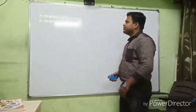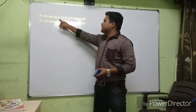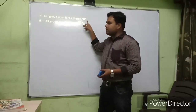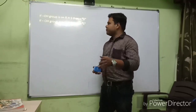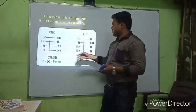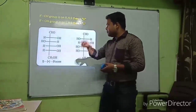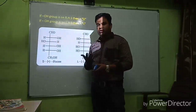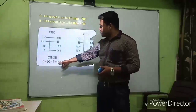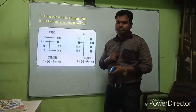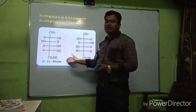If the OH group is on the right-hand side, it is called D; if on the left-hand side, it is called L. Now consider the structure of glucose. Glucose has molecular formula C₆H₁₂O₆. This is D-glucose and this is L-glucose. We are going to discuss the whole structure and how to identify it.